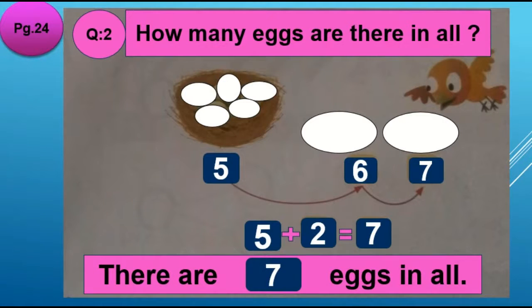Now look at question number 2. How many eggs are there in all? In all mean total. How many eggs are there? Let's count. 1, 2, 3, 4, 5. In the nest there are 5 eggs.